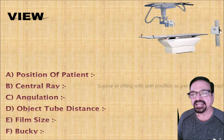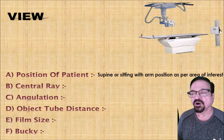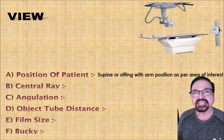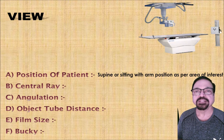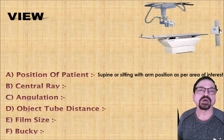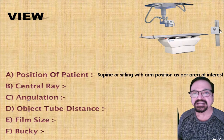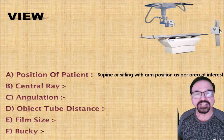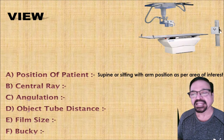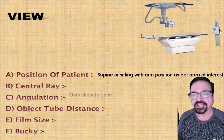Now what is the patient's position? The patient is kept in a supine or sitting position with the arm position as per interest — that is, the thumb position. It can be neutral or it can be externally rotated. Depending on the structure of the humerus you want to visualize — whether it is the greater tuberosity, lesser tuberosity, or the neck, either surgical or anatomical — we give the appropriate angulations.